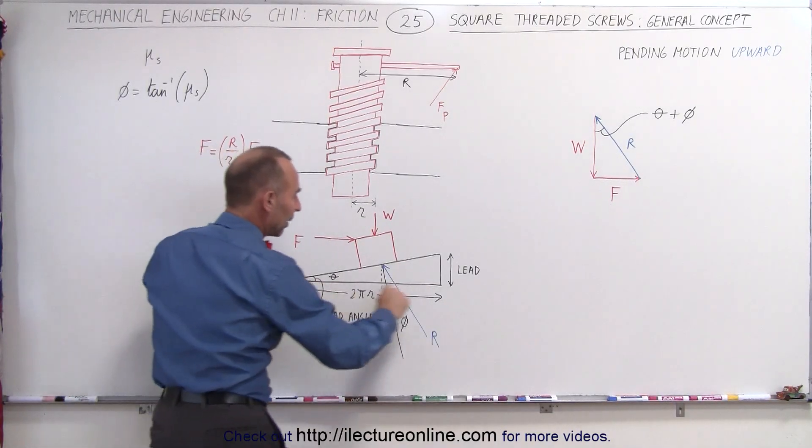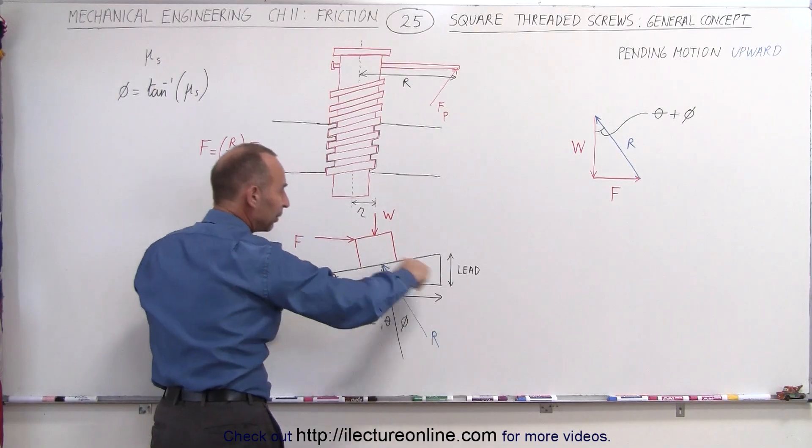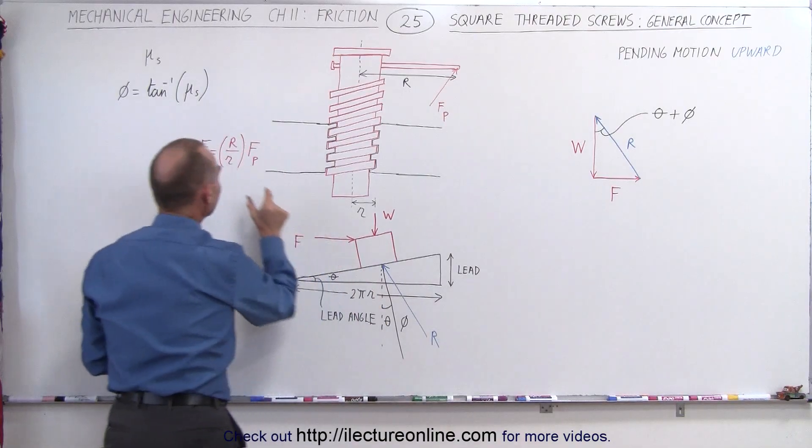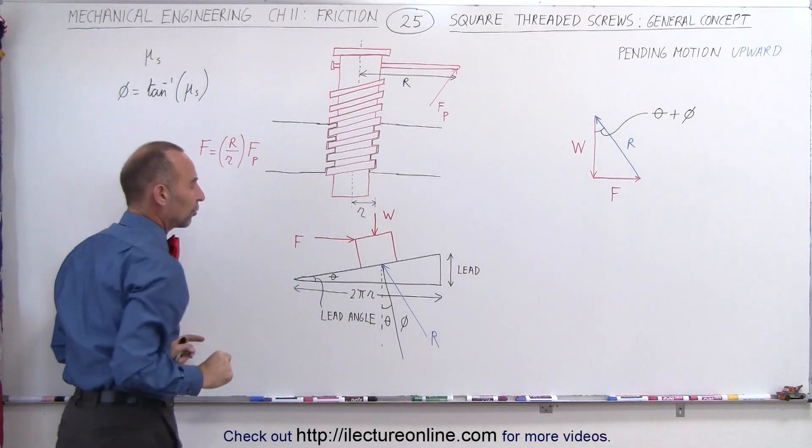Notice that this here represents the distance of one complete rotation of the thread, which is two pi times r, small r being the radius, the mean radius of the thread.